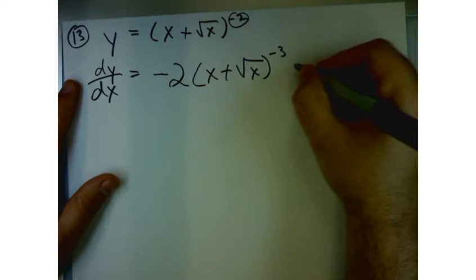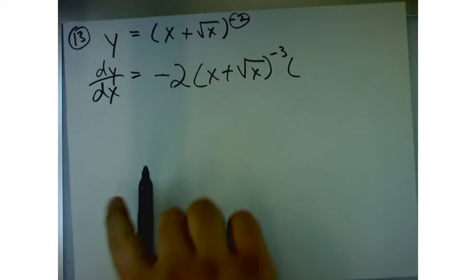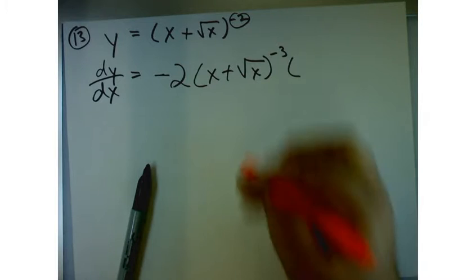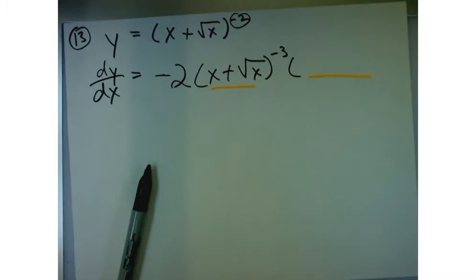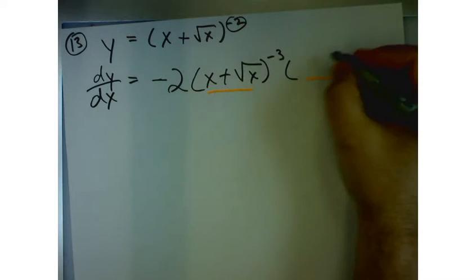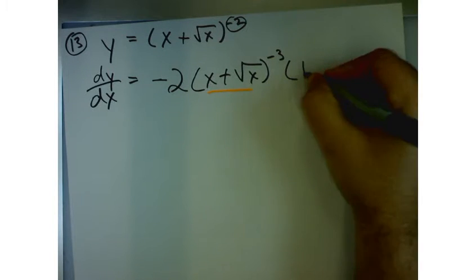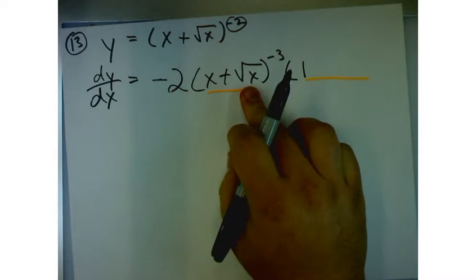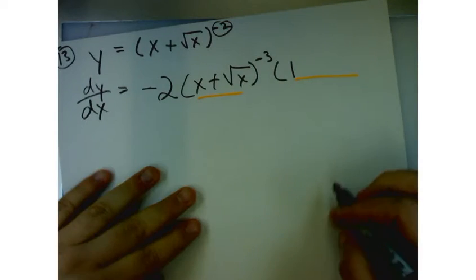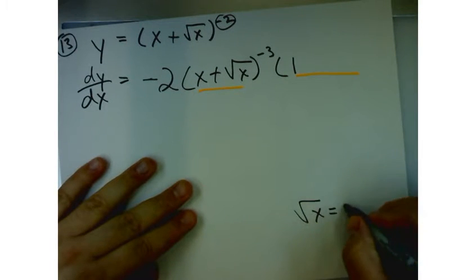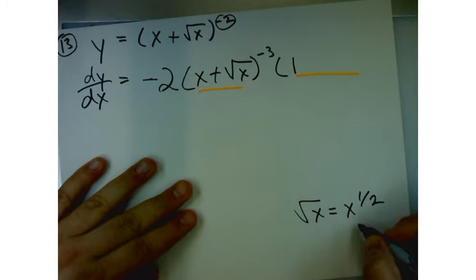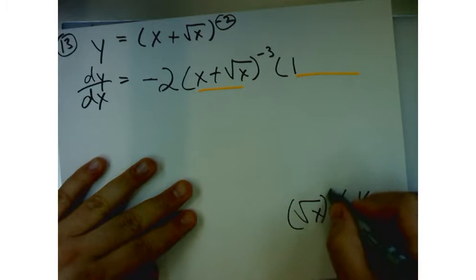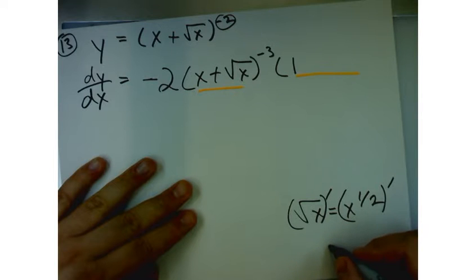Now I have to tack on the derivative of the stuff on the inside. What is the derivative of x? 1. What is the derivative of the square root of x? Remember that the square root of x is the same as x to the 1 half. So if I take the derivative of this, it's going to be 1 half x to the negative 1 half.